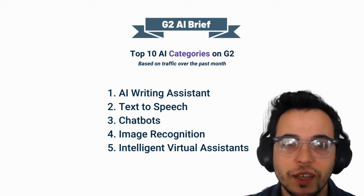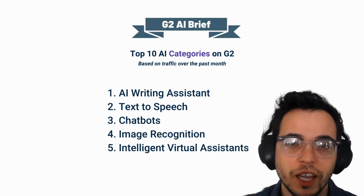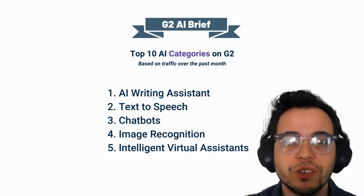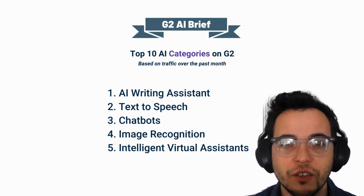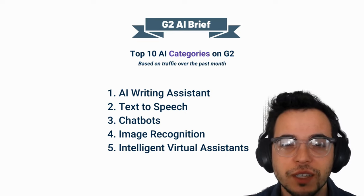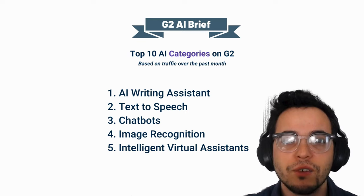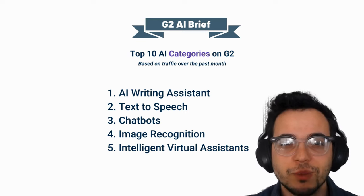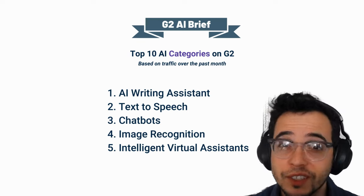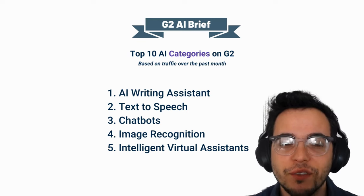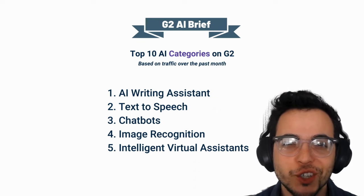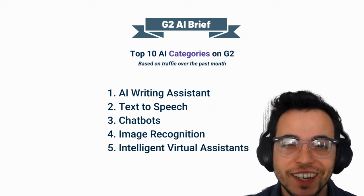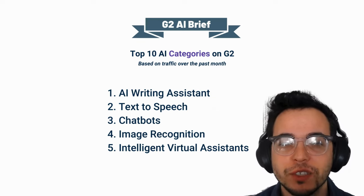The next and final category is IVA — chatbots 2.0, as I like to think about it. These solutions provide an even more advanced interface than chatbots, something very innovative, integrated with backend systems, providing the ability to have sustained conversations and a very powerful way for companies to get their information and content out to people in a conversational manner.